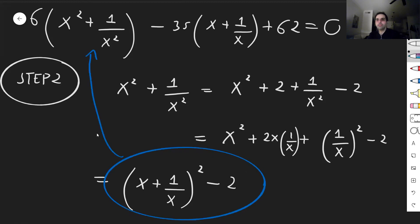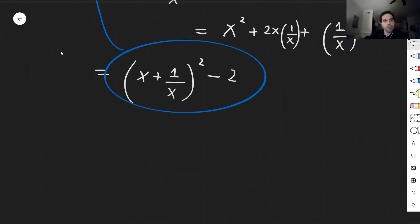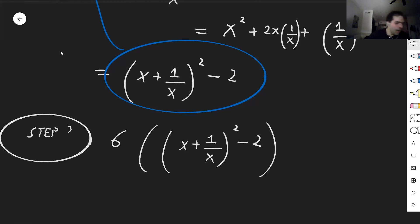So in the end, now step three, our polynomial becomes as follows. We still had the six. So six times the quantity x plus 1 over x, squared, minus 2. And then what was it? Minus 35 times x plus 1 over x. And then I believe we're at the lonely 62. Doesn't know what to do. 62 equals 0.